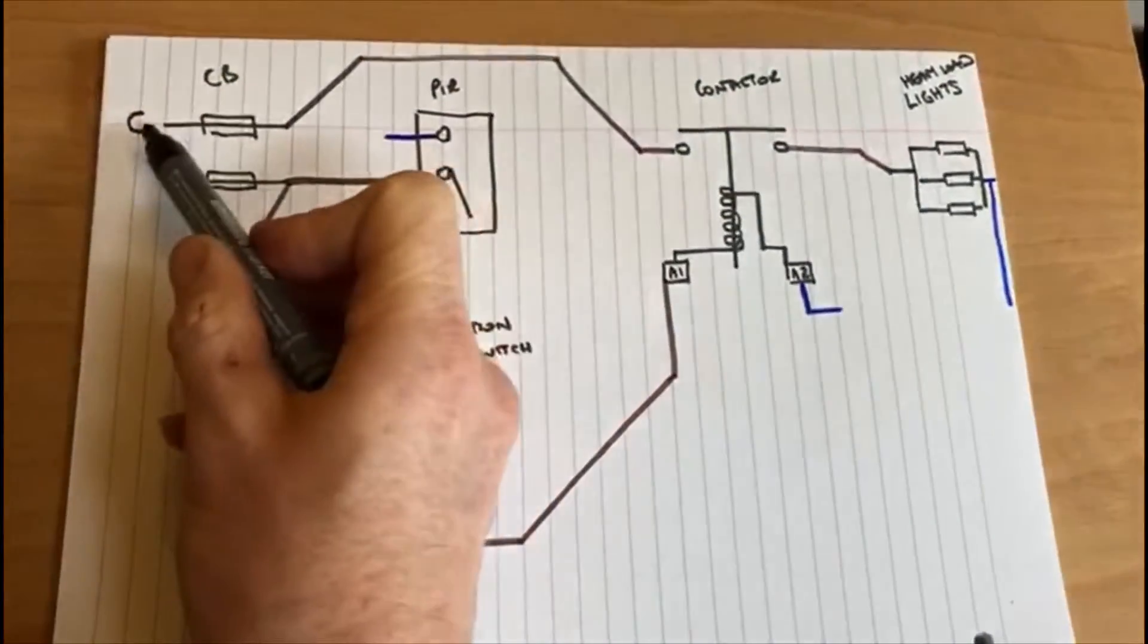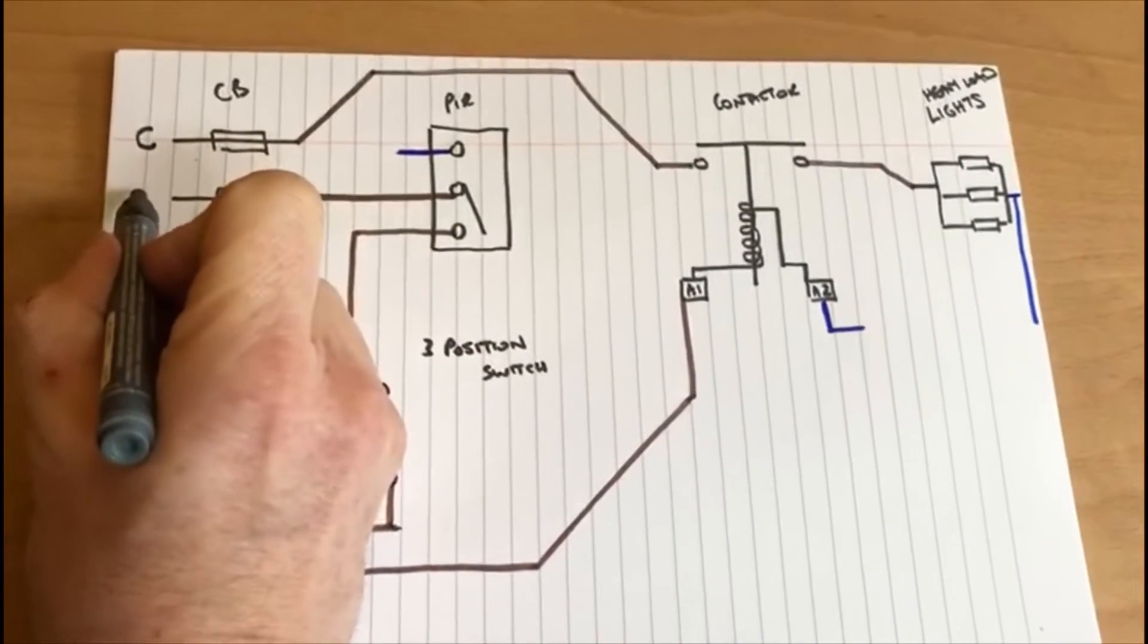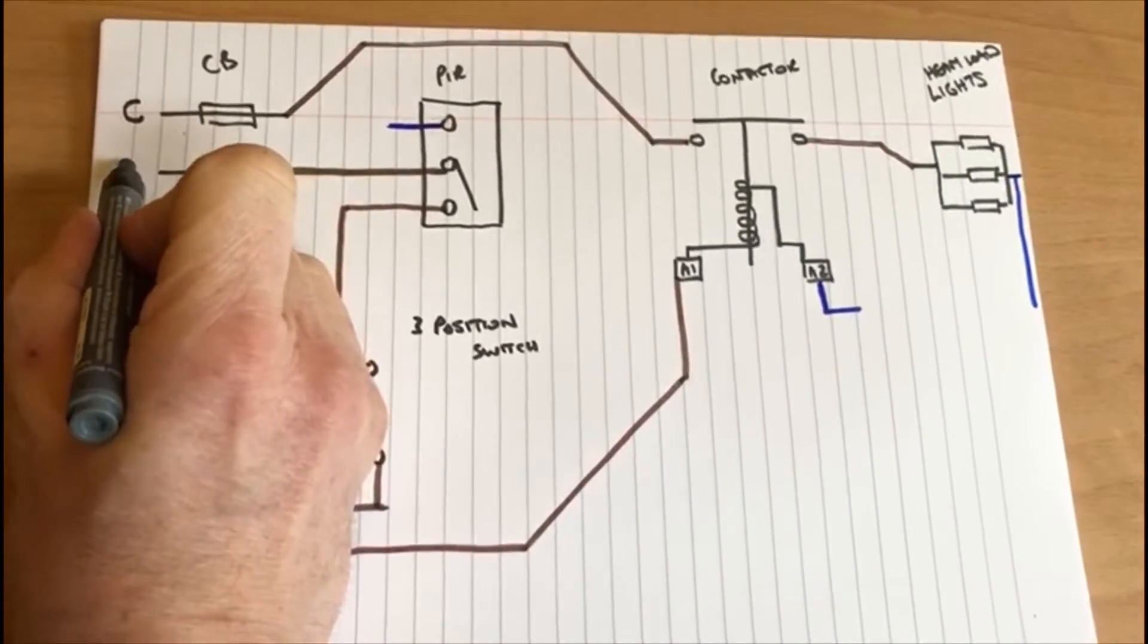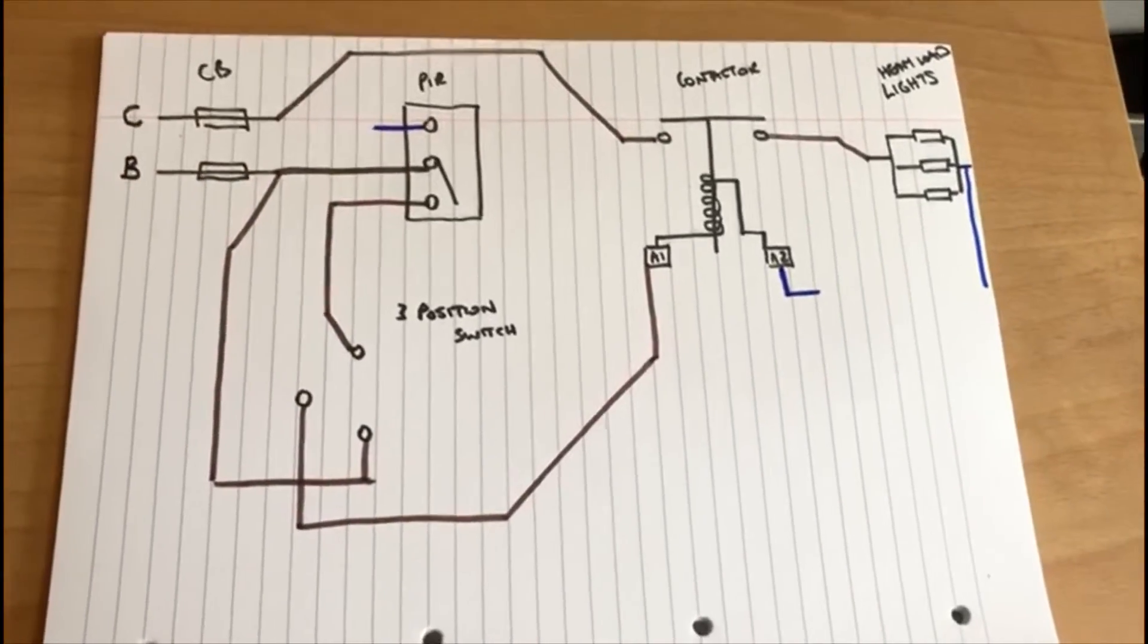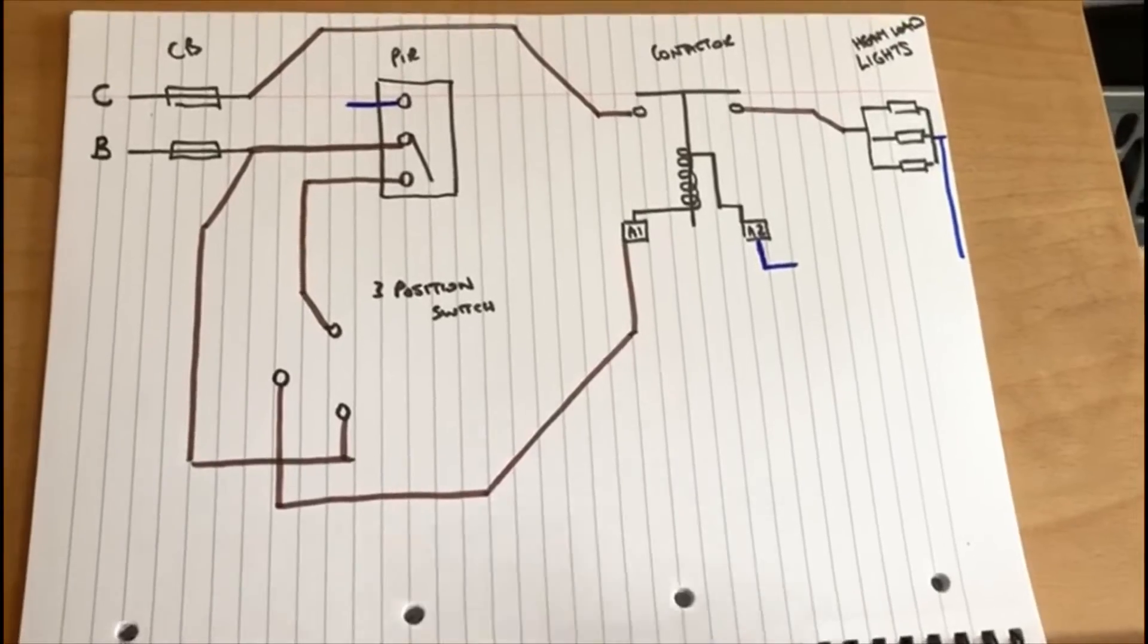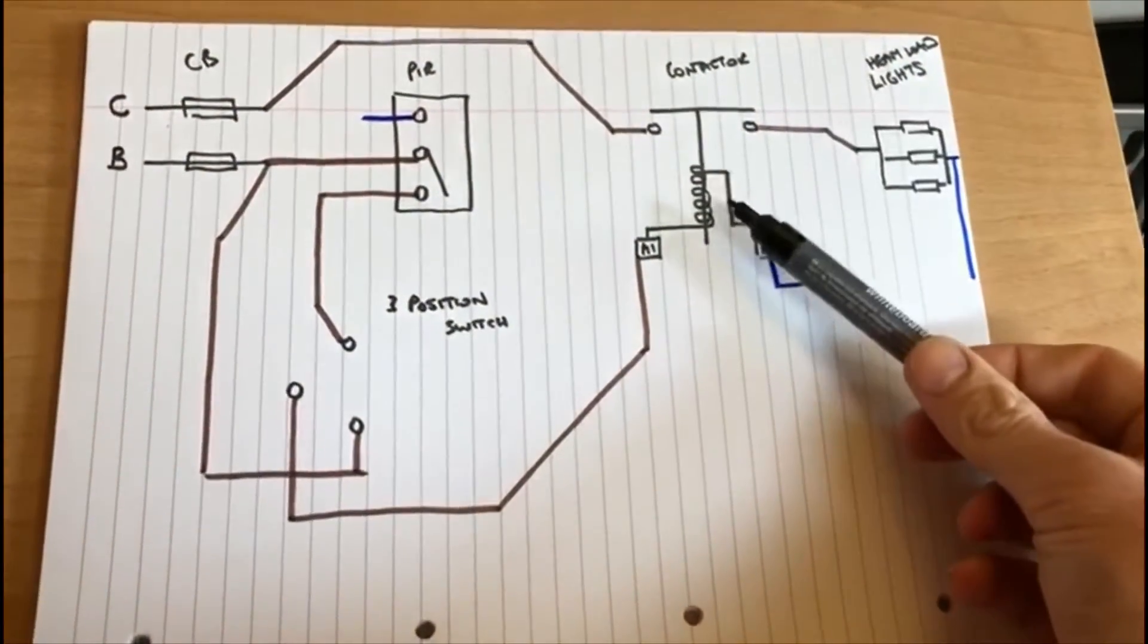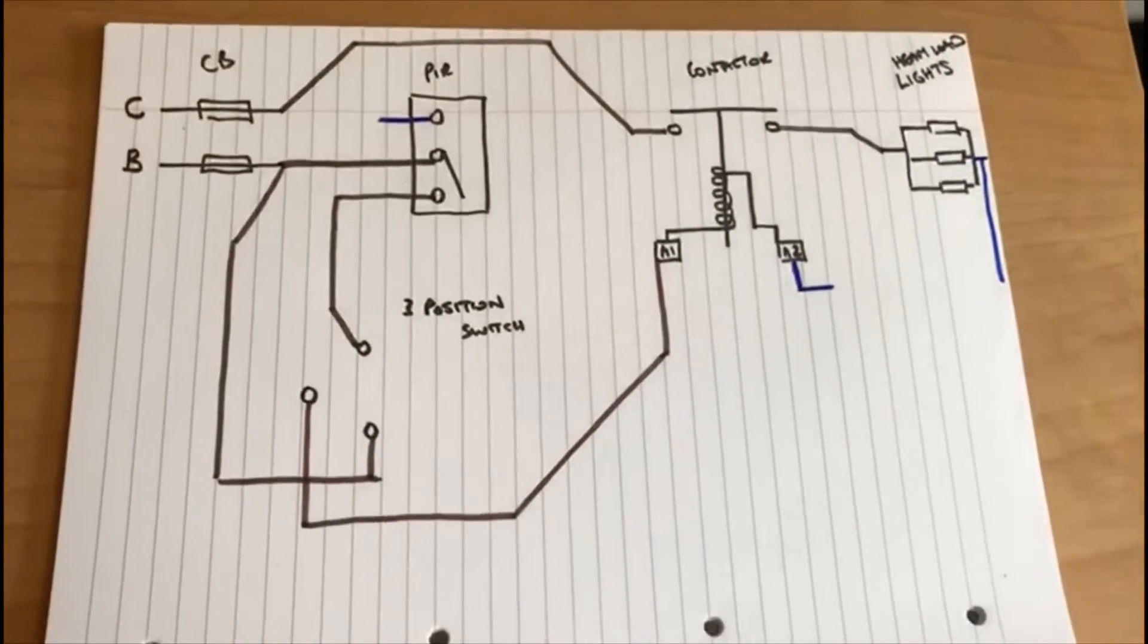So C type breaker might be important. This one however is just operating the coil of the contactor, so this only needs to be a small B type circuit breaker. So for example if that was drawing 15-20 amps, you'll probably have a 20 amp contactor and maybe a 20 amp circuit breaker here.